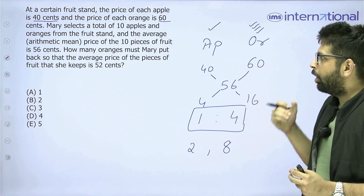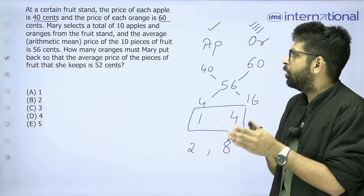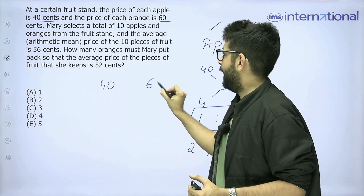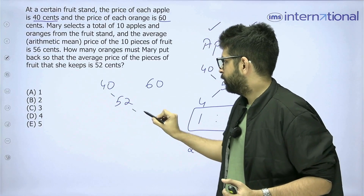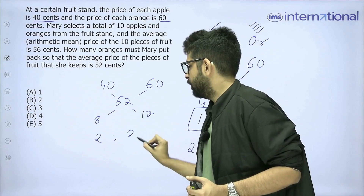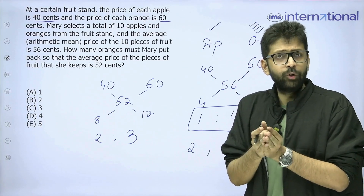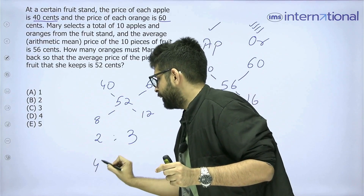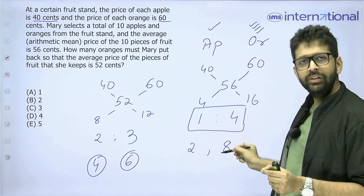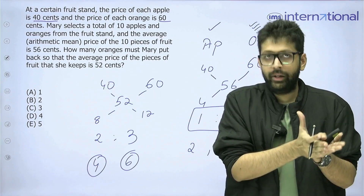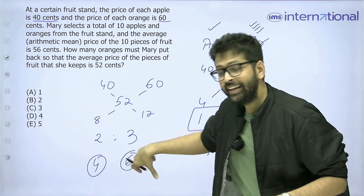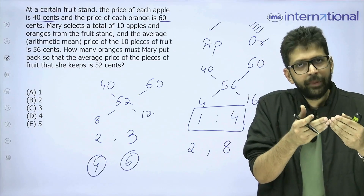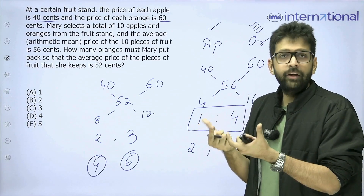However, how many oranges must Mary put back so that the average price of the fruits she keeps is 52 cents? Same approach: 40 and 60, with a new mean of 52. So 52 − 40 = 12, and 60 − 52 = 8. The ratio is 2 is to 3. Many people make an error here — they say there are 4 apples and 6 oranges, and since she had 8 oranges she returns 2. But she is returning, not replacing, so the total number of fruits will reduce. We cannot change the number of apples since she is only returning oranges.